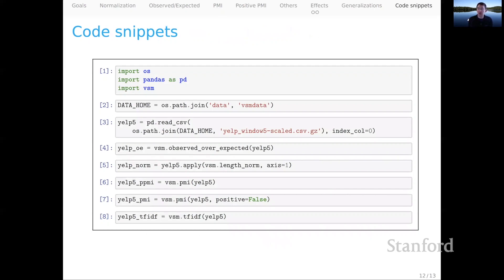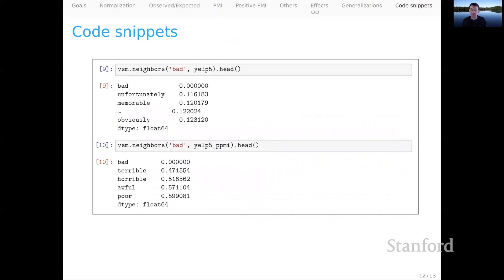Finally, some code snippets. I'm just showing off that our VSM module in the course repository makes it really easy to do these reweighting schemes, all the ones that we've talked about and more in fact. And returning to the end of our vector comparison method, you might recall that I looked at the neighbors of 'bad' in this Yelp 5 matrix, and it really didn't look good. This does not look especially semantically coherent. When I take those underlying counts and I just adjust them by positive PMI, I start to see something that looks quite semantically coherent. And I think we're starting to see the promise of these methods. And this is really just the beginning in terms of surfacing semantically coherent and interesting information from these underlying counts.